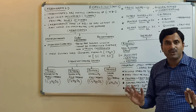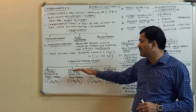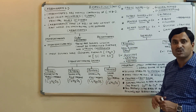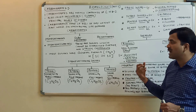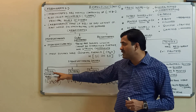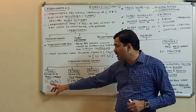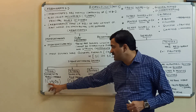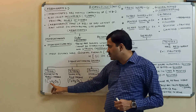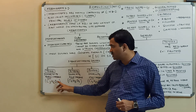Monosaccharide sugars can be classified into four categories based on how many carbon atoms are present: triose, tetrose, pentose, and hexose. A monosaccharide with three carbon atoms is called a triose; its empirical formula is C₃H₆O₃, since hydrogen atoms are double the carbon count.